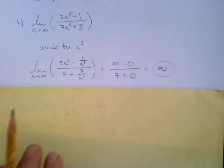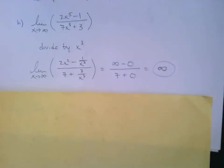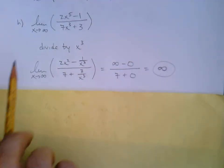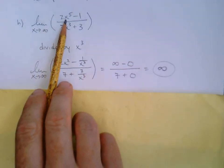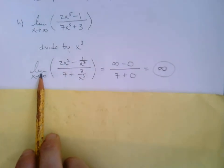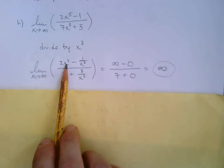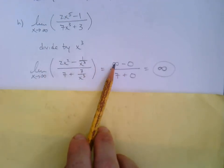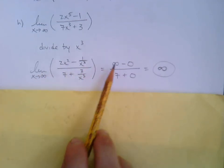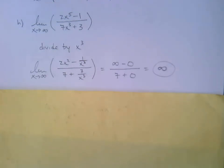One thing we didn't see in these examples: in homework you might see problems with x approaching negative infinity. If that's the case, be careful about the powers after you simplify. For example, if you have x squared it's still going to positive infinity, but if you have an odd power of x with negative infinity, that goes to negative infinity. Watch out for that. There are a couple more examples to wrap up this section in the next video.